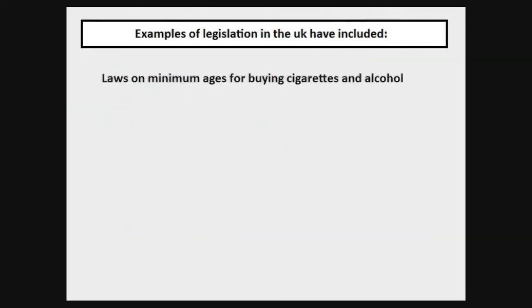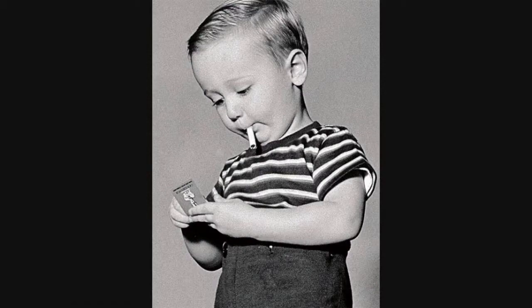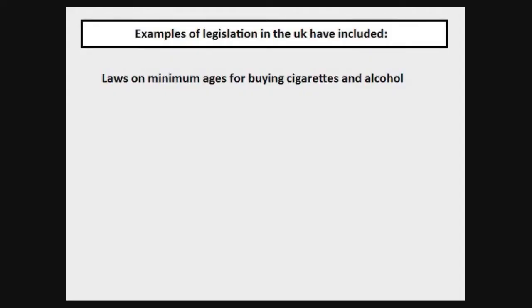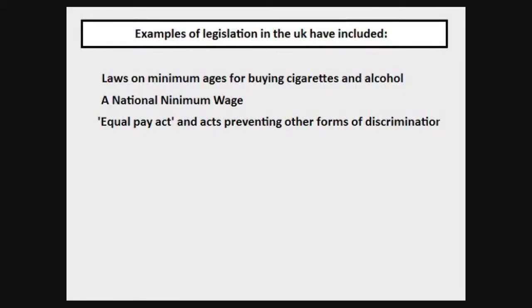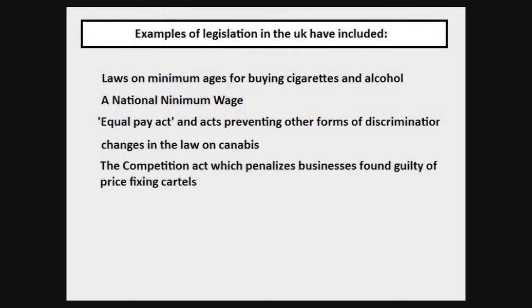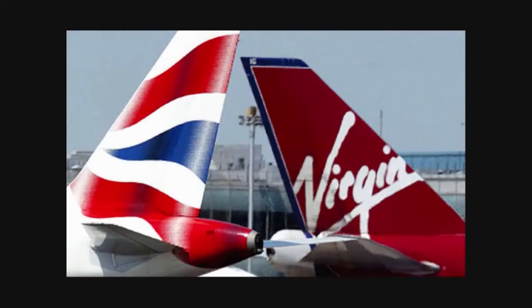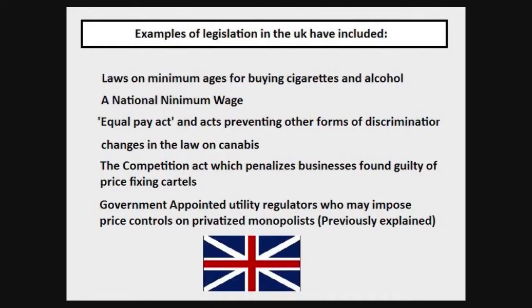Examples of legislation in the UK have included laws on minimum ages for buying cigarettes and alcohol, a national minimum wage, the Equal Pay Act and acts preventing other forms of discrimination, changes in the law on cannabis, the Competition Act which penalises businesses found guilty of price fixing cartels, and government appointed utility regulators who impose price controls on privatised monopolies.